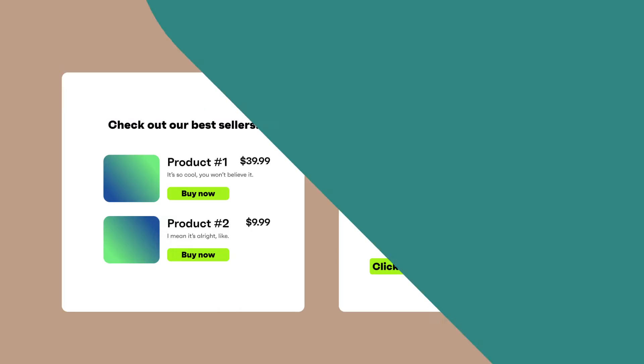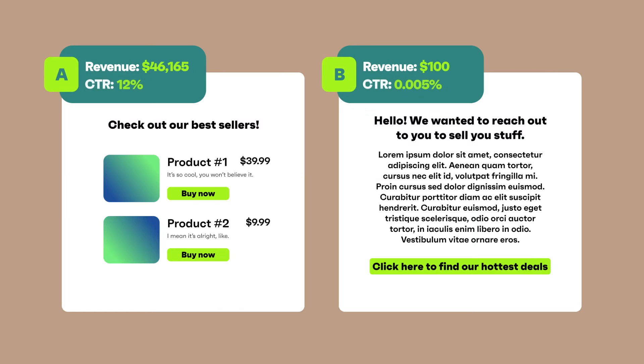Today we're diving into some awesome tips for using A-B testing in our automation builder. A-B testing is a fantastic way to optimize your marketing strategies. By comparing two versions of your automation, you can see which one performs better and drives more engagement and sales.